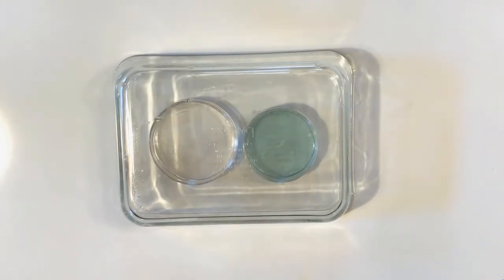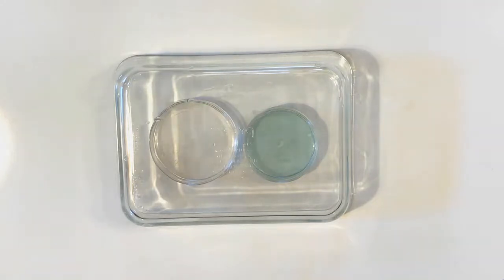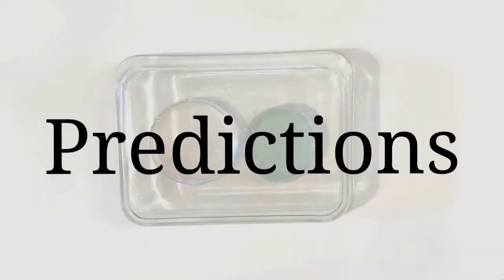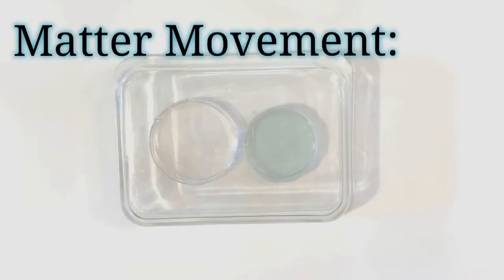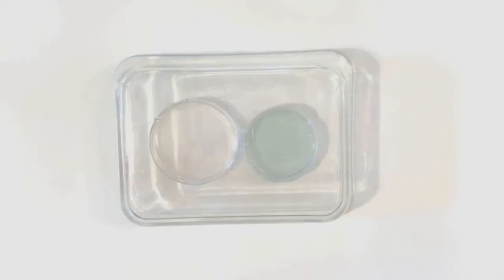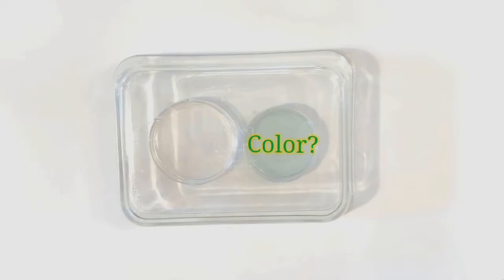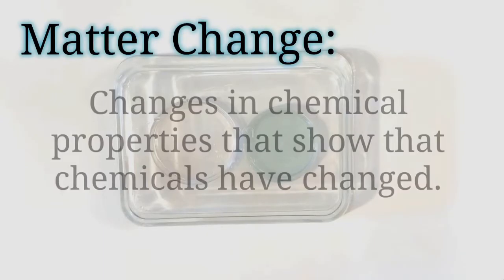While we're waiting for our results, let's go ahead and make some predictions. What do you think will happen to the ethanol's mass? We can refer to this as the matter movement question. What about the color of the BTB? What do you think that's going to do? Since the BTB tells us about any changes in chemicals, we can refer to this as the matter change question.